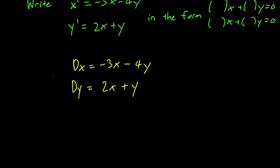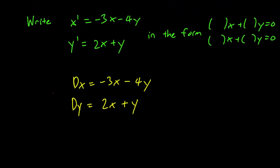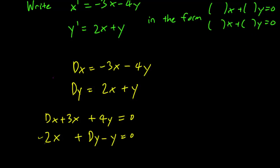The next step is to move all the terms to the left and in particular to write down the x's first before the y's. So we have Dx + 3x + 4y = 0. Sorry, I forgot the minus sign here. So it's -2x + Dy - y = 0.